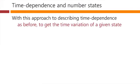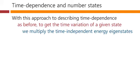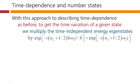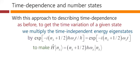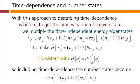With this approach to describing time dependence, as before, to get the time variation of a given state we multiply our time-independent energy eigenstates by a factor e^(−iEt/ℏ). For our specific state |n_λ⟩ with n_λ photons in mode λ, the eigenenergy is (n_λ + ½)ℏω_λ. We can simplify by cancelling the ℏ factors, but the point is the same. This is the factor we multiply our eigenstate by, making our time-independent Schrödinger equation consistent with the time-dependent version as a result of including this factor together with our time-independent energy eigenstate.